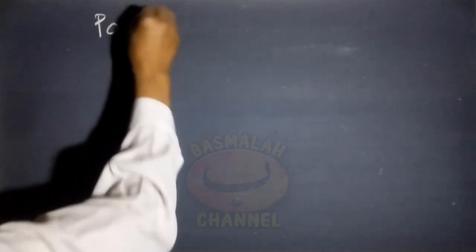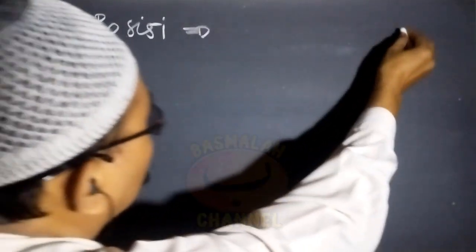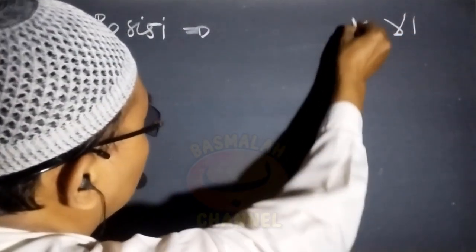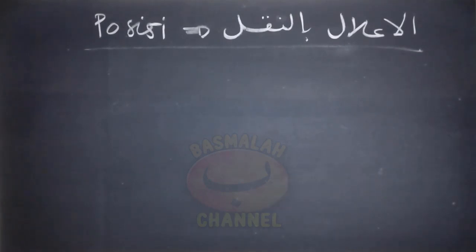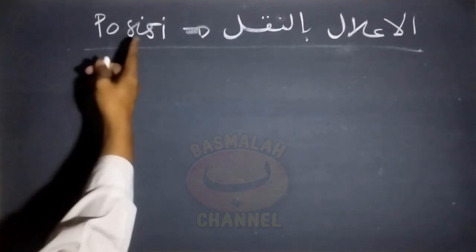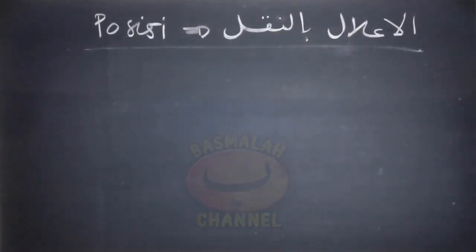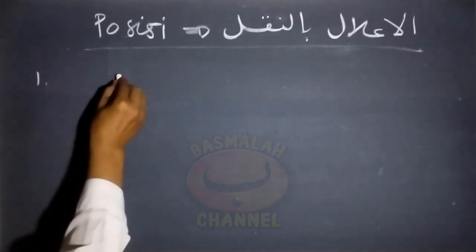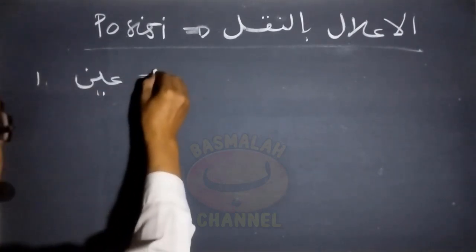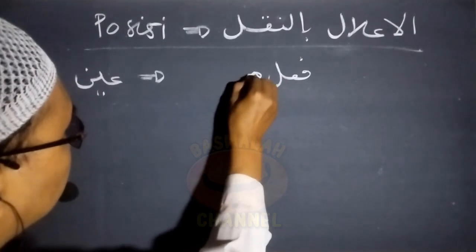Bismillahirrahmanirrahim. Pembahasan kita kali ini adalah tentang posisi terjadinya Al-I'lal bin Naqli. Ketentuan dan kaedah tentang Al-I'lal bin Naqli ini telah kita bahas pada pembahasan terdahulu. Untuk kali ini kita akan membahas dimana saja posisi terjadinya Al-I'lal bin Naqli tersebut. Al-I'lal bin Naqli terjadi pada yang pertama, ain fi'il dari fi'il mu'tal.